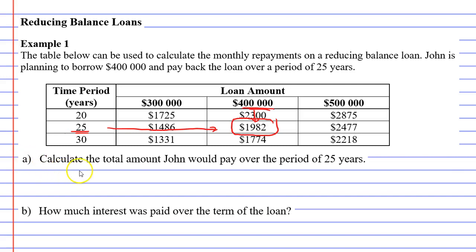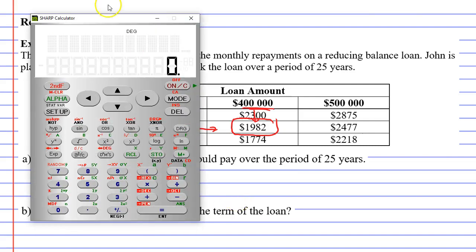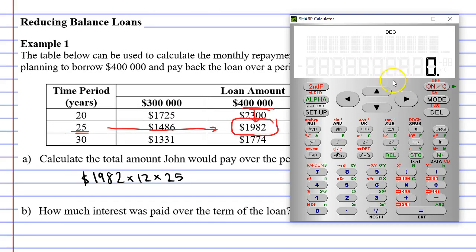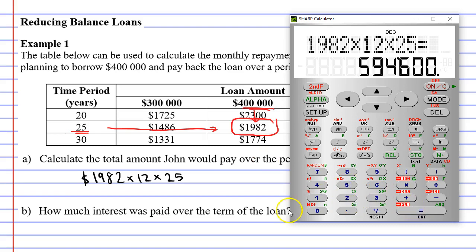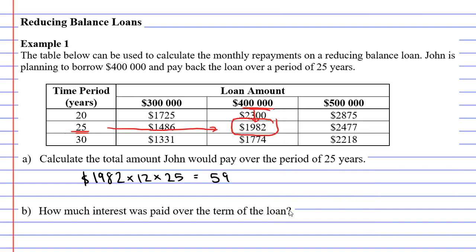Question A says: calculate the total amount John would pay over the period of 25 years. We know he's going to pay $1,982 per month. There are 12 months in a year, and he's doing this over a period of 25 years, so we multiply by 25 as well. $1,982 times 12 times 25 equals $594,600 — so over half a million dollars.